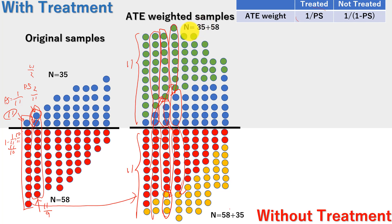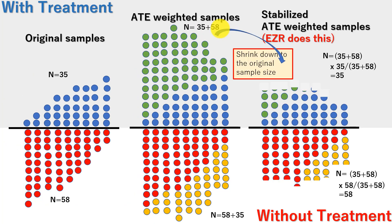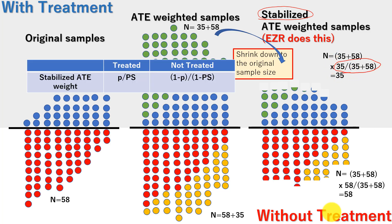As you might have noticed, sample size gets doubled, so we need to shrink it back to the original size. This is where stabilized ATE weights come in. The formula adds an extra term: P, which is the number of treated over total sample size — for example, 35 over 93. This shrinks the ATE weighted sample down to the original sample size, so total sample size remains similar to the original while the distribution of treated and untreated becomes balanced.